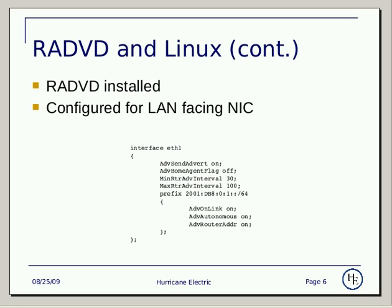Next, you'll need to get the router advertisement daemon package installed. Once installed, you'll edit its configuration file. Depending on your Linux distribution, it can be in either /etc or /usr/local/etc — you'll need to follow the documentation. In this case, we want to make sure it's configured for the LAN-facing NIC, so we specify interface eth1.